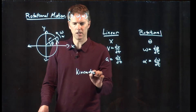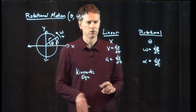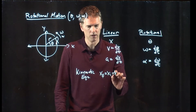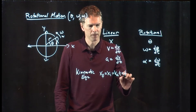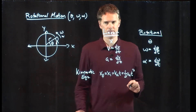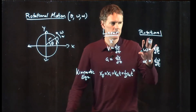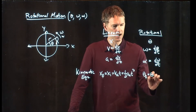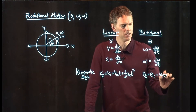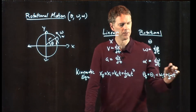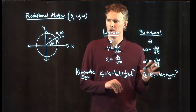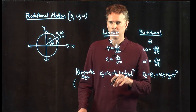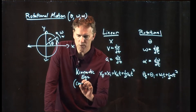Since we're making these substitutions, we also have a whole set of kinematic equations which govern motion. For instance, x-final equals x-initial plus v-x-initial times t plus one-half a-x t-squared. We can write the corresponding rotational equation: theta-final equals theta-initial plus omega-initial times t plus one-half alpha t-squared. All the math is exactly the same — we're just changing the variables.